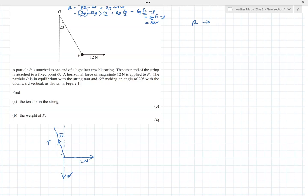Resolving horizontally, we basically want the component of T going that way, and that component has to be T sine 20 because it's away from the marked angle. So that's T sine 20, and that must counteract with the 12 newton force.